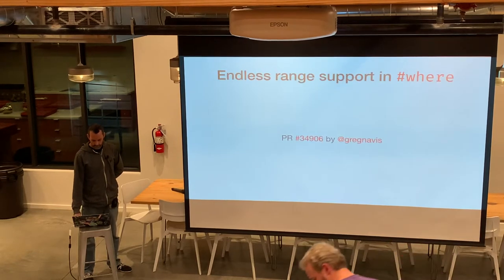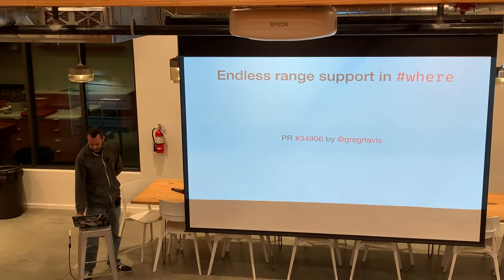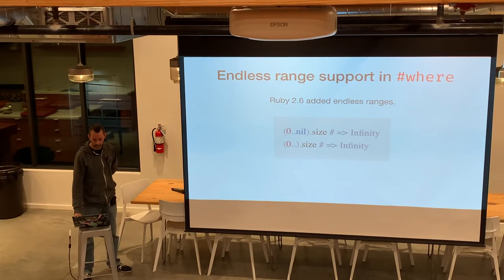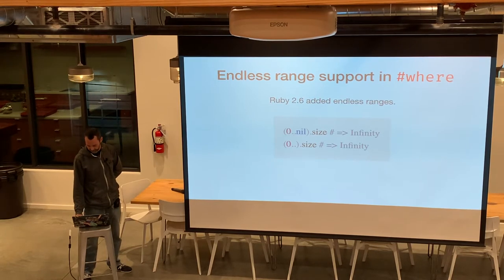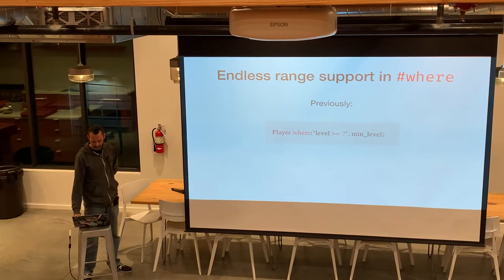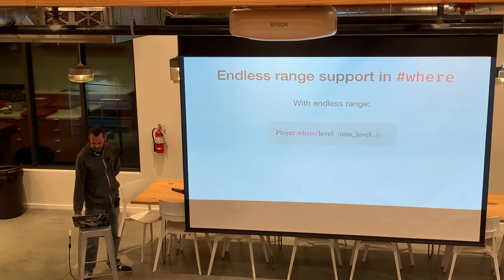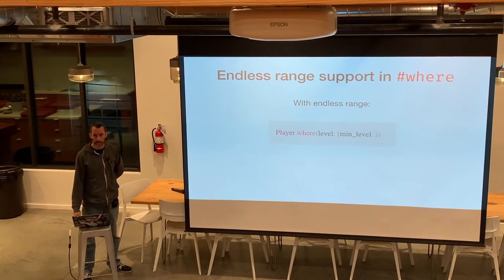Number nine: endless range support in where, PR 34906 by Greg Navis. Ruby 2.6 added endless ranges — you can do 0..nil or just 0.. and leave it open-ended; the size is infinite. Previously, if you wanted a player where the player's level is greater than or equal to some min level, you'd do SQL interpolation. With this new syntax, you can write more idiomatic Ruby: Player.where(level: min_level..).